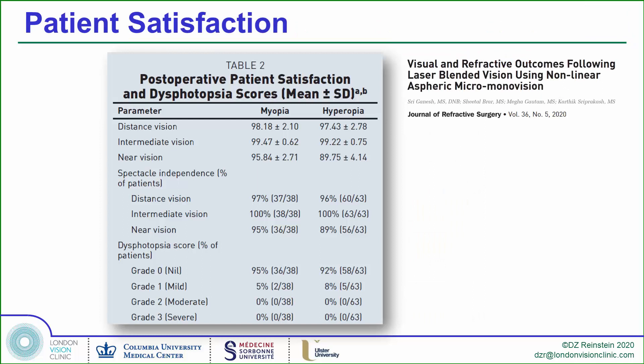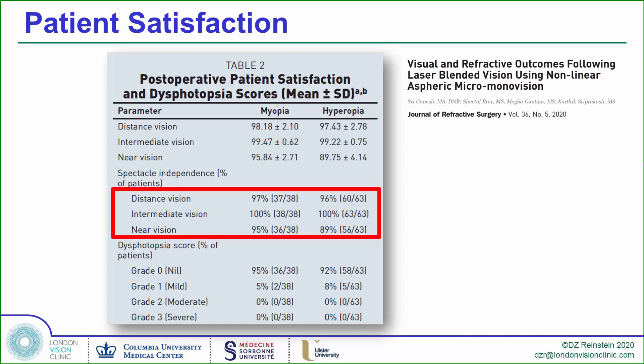Sri Ganesh and his group studied patient-reported outcome measures in Presbyond and published extremely high satisfaction rates, with only 3–5% of patients still using spectacles for distance or near tasks, and none at intermediate.